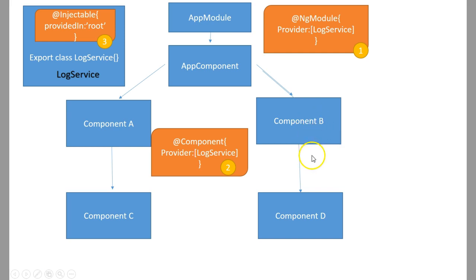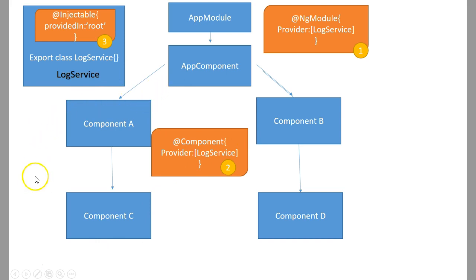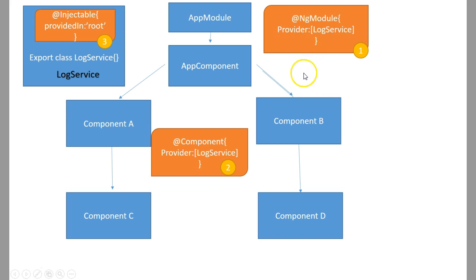Another thing to keep in mind is the lifespan of instances. The instance created by a component-level injector lives only until the component gets destroyed — when the component is destroyed, the injector is destroyed and the instance is also killed. But the instance created by the NgModule root-level injector stays alive until the application itself is alive. So you need to understand when to use each approach.